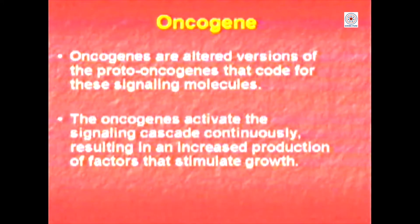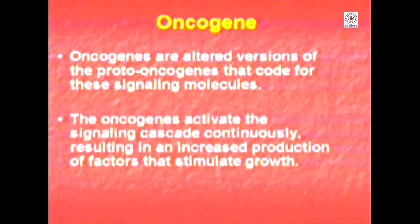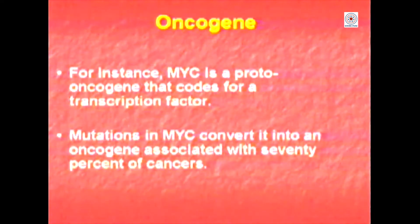Now let us see what is an oncogene. Oncogenes are altered versions of proto-oncogenes, or genes that code for the signaling molecules. The oncogenes activate signaling cascades continuously, resulting in increased production of factors that will stimulate growth.